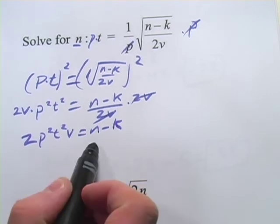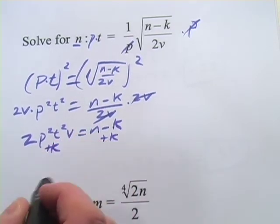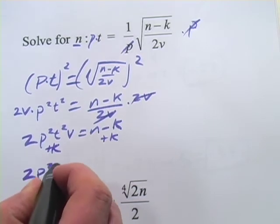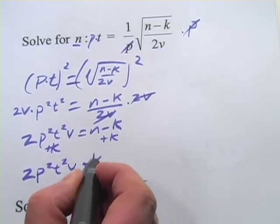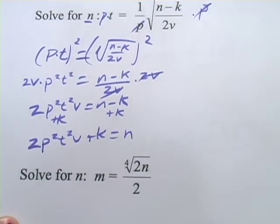So all I have to do to get n totally alone is add k to both sides. And I get 2p squared t squared v plus k equals n. And I have solved that for n.